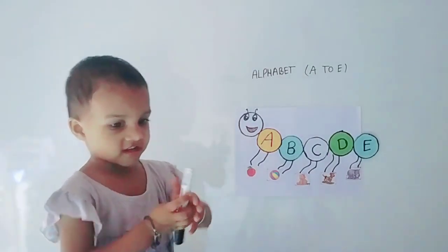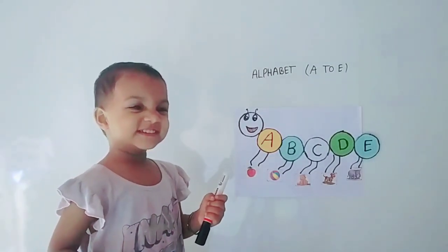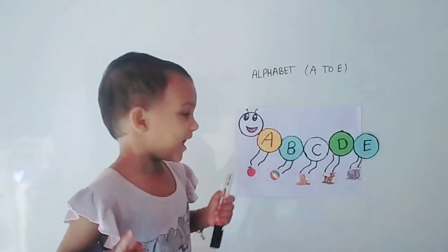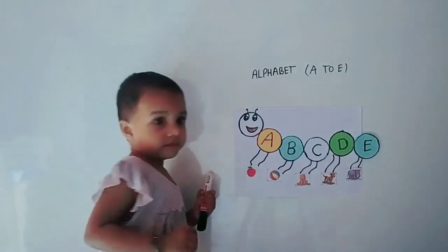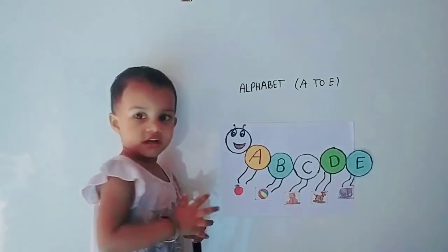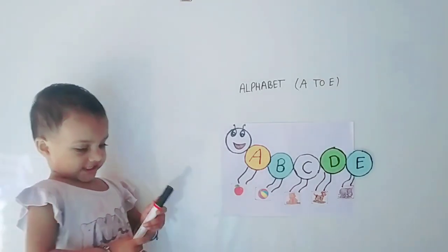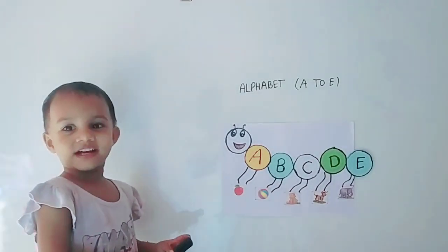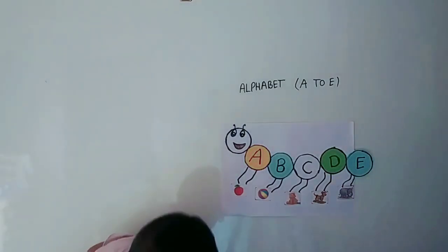Very good! Cat kaise kerti hai? Sound batao cat ki — Meow! Very good! Dog kaise karta hai? Very good! Aur Elephant kaise karta hai? Very good! Have you seen an elephant? Haathi ko dekha hai bita?